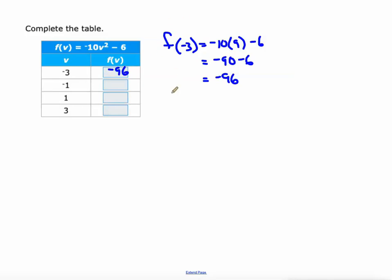A little bit of mental math there. So f of negative 1 is negative 10 times negative 1 squared. Negative 1 squared is 1 minus 6, so that's negative 10 minus 6 which is negative 16. F at 1 is negative 10 times 1 squared which is 1 minus 6. That gives us negative 10 minus 6. Check it out, it's negative 16 again.